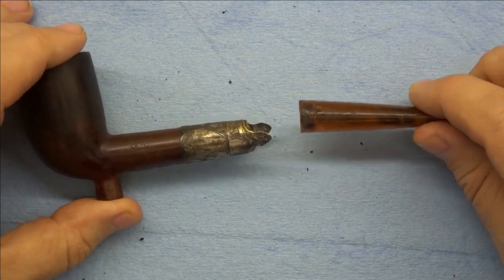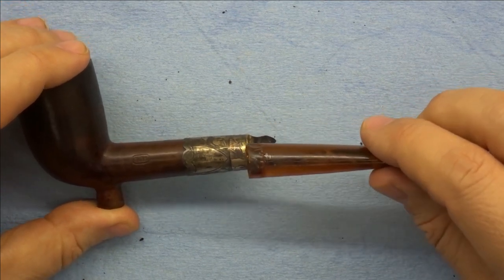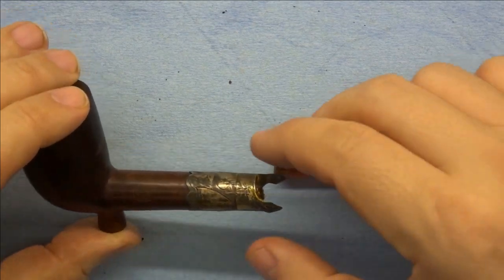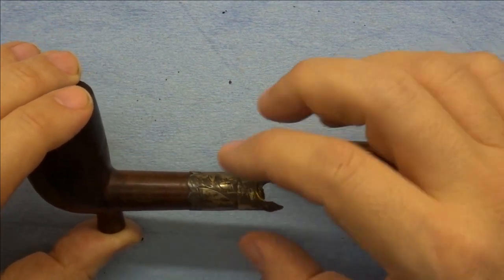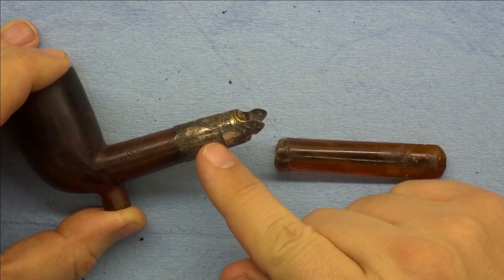So the first thing we're going to be doing is trying to get this mortise and tenon separated. As I mentioned in the overview video, this is a screw-in tenon. You can kind of see the seam right in there.